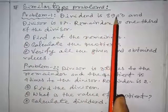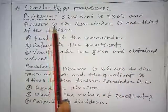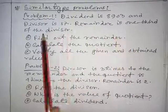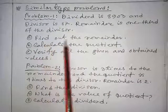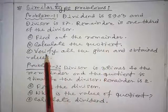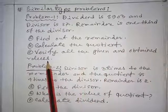Dividend is 8903 and the divisor is 87. Remainder is one-third of the divisor. A: Find out the remainder. B: Calculate the quotient. C: Verify all the given and obtained values.